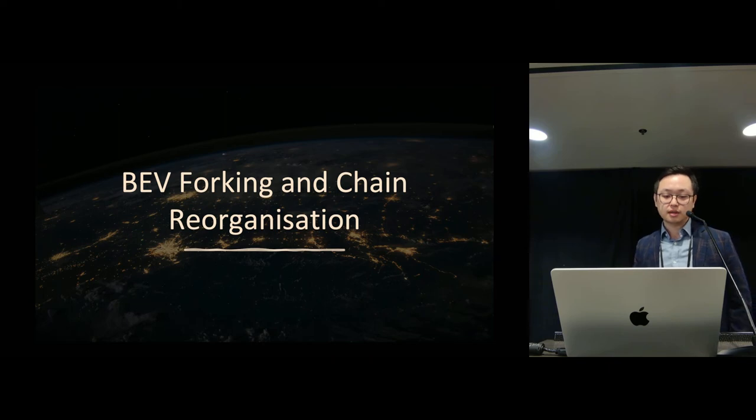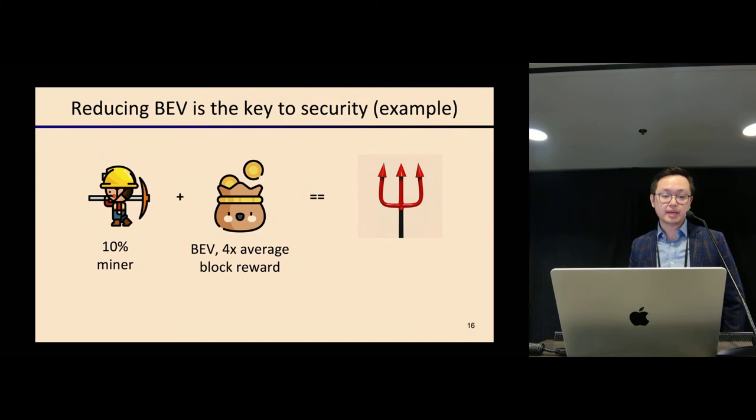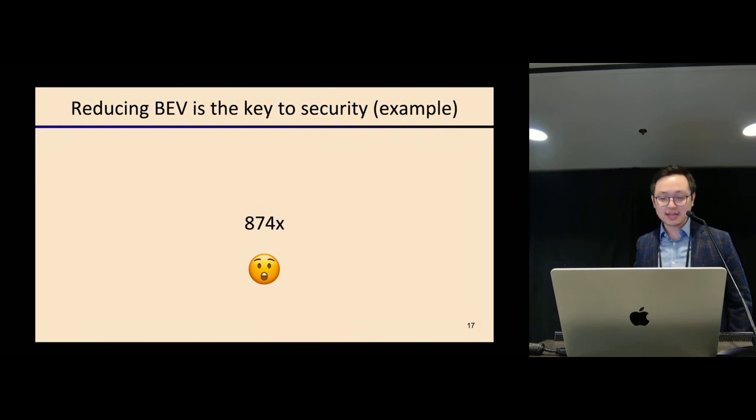Why is BEV an important issue in blockchain? What's the security implication? The biggest security implication is miners may attempt to fork the blockchain to steal the BEV opportunities from other miners. We did some analytical evaluation. Based on our evaluation, it's rational for a miner with 10% of hashing power to fork the blockchain if the BEV is four times the average block reward. But guess how much? The biggest BEV we detected is actually 874 times the block reward. Under such a scenario, even small miners will try to fork the blockchain, which is a huge risk for the consensus layer. This will increase the stale block rate and make double spending attacks easier.